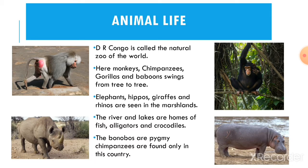Animal life: The Democratic Republic of Congo is called the National Zoo of the World. Here monkeys, chimpanzees, gorillas, and baboons swing from tree to tree. Elephants, hippos, giraffes, and rhinos are seen in the marshland. The rivers and lakes are home to fish, alligators, and crocodiles. The bonobos, or pygmy chimpanzees, are found only in this country.